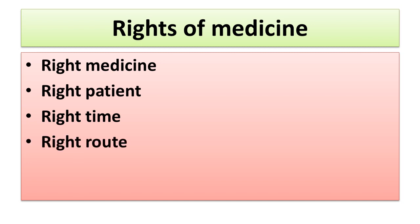The third right is right time — you should give the medicine at the right time. The fourth is right route — your selection of route should be correct; for example, if the medicine is oral, you should not give it IV but follow the doctor's order. The fifth and last right is right dose — do not give an overdose or below the required dose of the medicine.